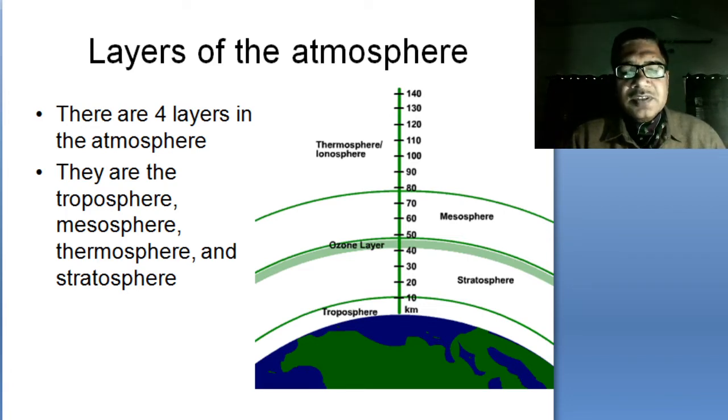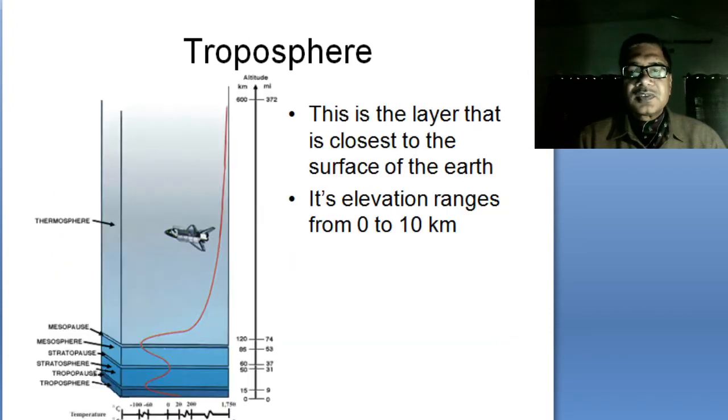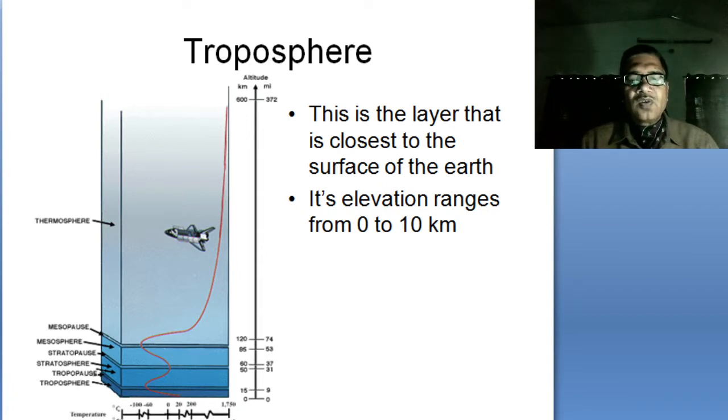So again I repeat the names. The troposphere nearest to the earth. As you move further we have stratosphere, then we have mesosphere and then we have thermosphere. There is one more layer which is found between stratosphere and mesosphere which is known as the ozone layer about which we studied in the previous video. Now let's talk about all these layers one by one and also find out what is their importance.